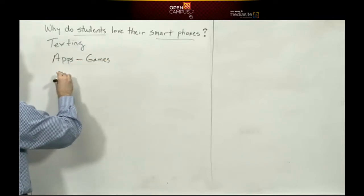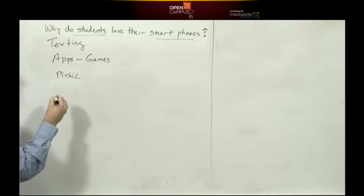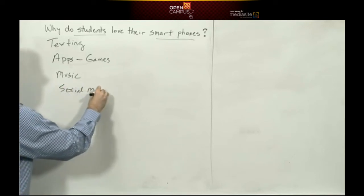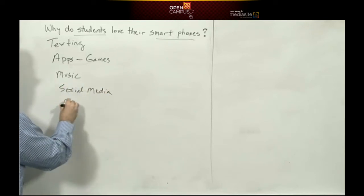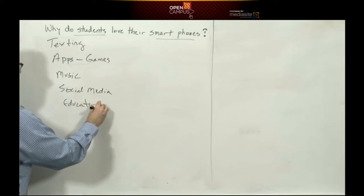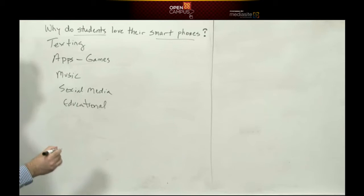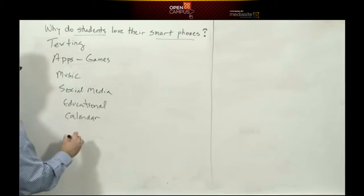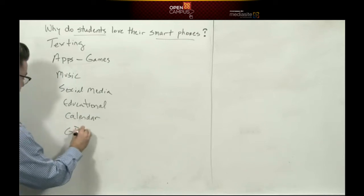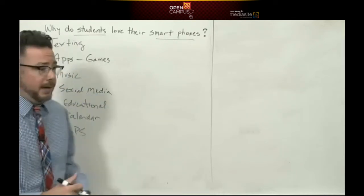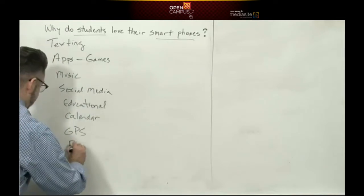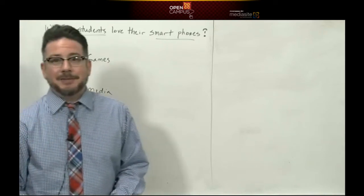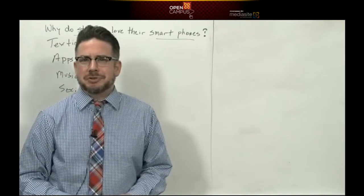There are apps for games. There's music. There are apps for social media. There are educational apps out there. There are apps for calendar — you can keep track of your appointments and track your day. There's GPS — you can navigate and get directions to anywhere through an app. And fast food — I have recently discovered that all my fast food places have apps for mobile ordering, which is just almost too convenient.